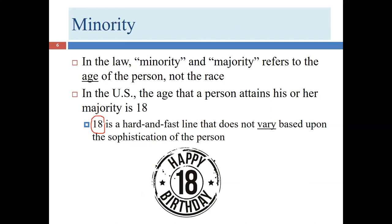Contract law has many arbitrary cut-off points: if you're on one side, this happens; on the other, that happens. There is really no meaningful difference between someone who is 17 years and 364 days old versus exactly 18 years old, yet we treat them very differently legally. The law needs these on/off switches so everyone knows the rules.